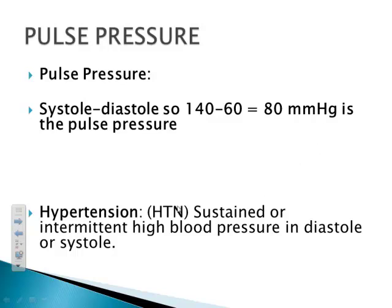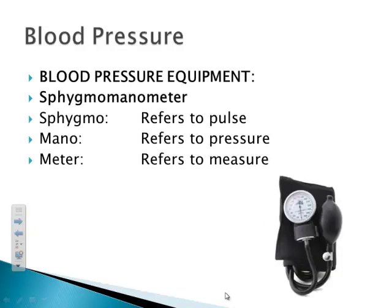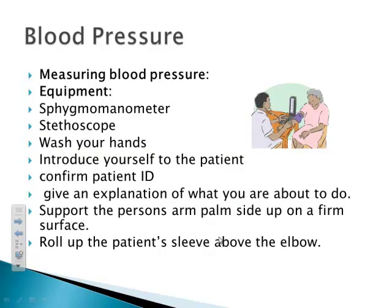Hypertension, abbreviated HTN, is sustained or intermittent high blood pressure in diastole or systole. A patient can be classified as hypertensive with elevation in either systolic or diastolic alone — both don't need to be elevated. Hypotension is sustained or intermittent low blood pressure. Blood pressure equipment is the sphygmomanometer — sphygmo refers to pulse, manno to pressure, and meter to measure — used along with a stethoscope.